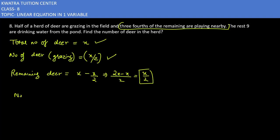Now let's think about the number of deer playing. How much are they? Three-fourths of the remaining, which is x by two. So it is 3x over eight.